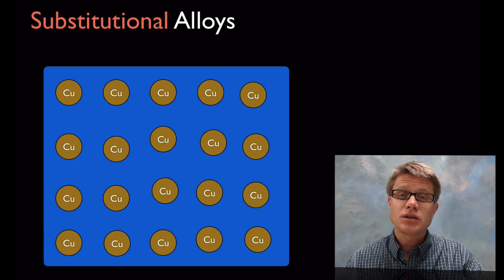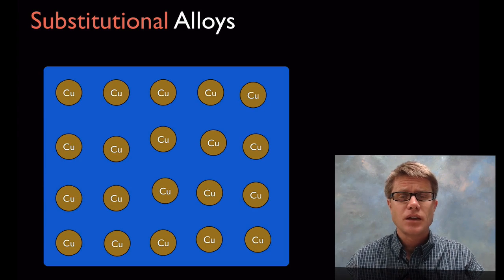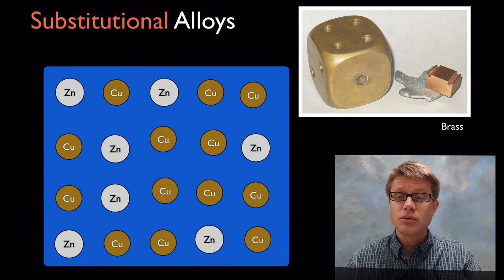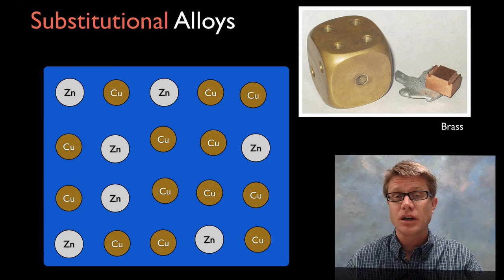Another type of metal are going to be substitutional alloys. Substitutional alloys is when we're taking in atoms that are about the same size. So if we take copper and we add zinc to it then we can make brass. It's going to have different characteristics than those metals by themselves.